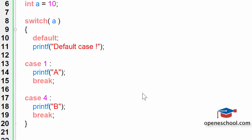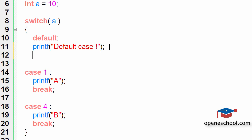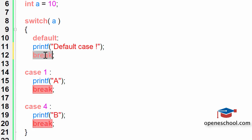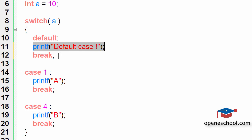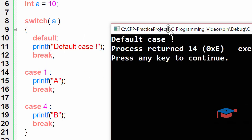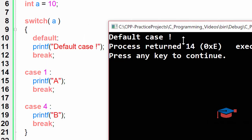Notice that the line 'default case' has been printed, and then the printf for a also got executed and a has been printed on the screen. To avoid the execution of other cases when the default case runs, we have to use the break statement with the default case as well, because it will indicate to the program that after execution of that line it should break out and go outside the switch body.